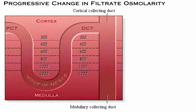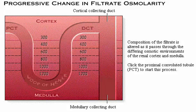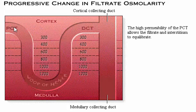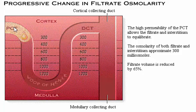Let's review how filtrate concentration in the tubules is related to interstitial osmolarity. Watch the changes in the concentration and volume of the filtrate as it passes through the differing osmotic environments of the cortex and medulla. Since the cells of the proximal convoluted tubule are highly permeable to both solutes and water, the relative osmolarity of the filtrate remains equal to the 300 milliosmol solute concentration of the interstitium. The cell's high permeability also accounts for a 65% reduction in filtrate volume.